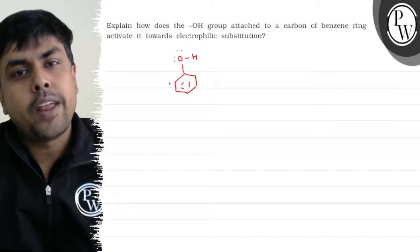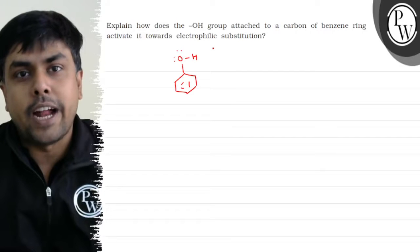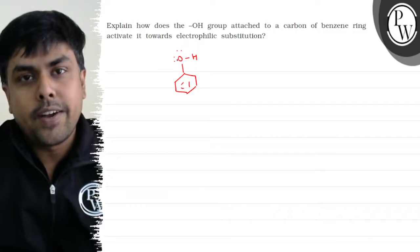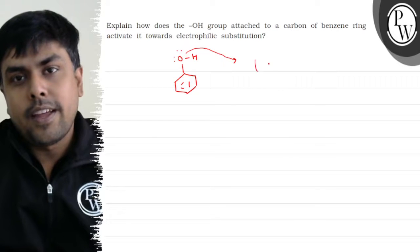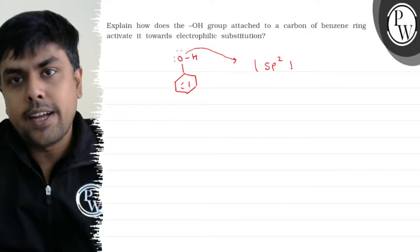OH. OH has a lone pair. This oxygen atom has a lone pair. If I talk about the hybridization of this oxygen atom, can I say it is sp2 hybridized?